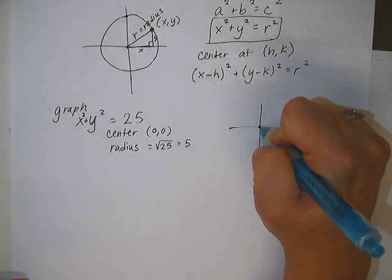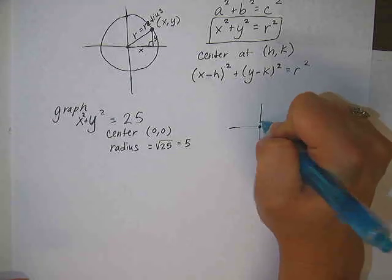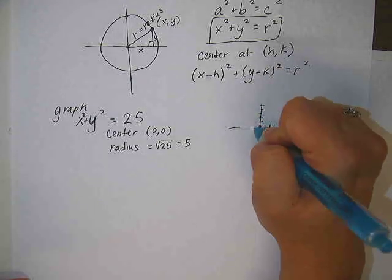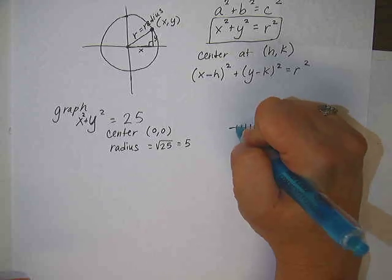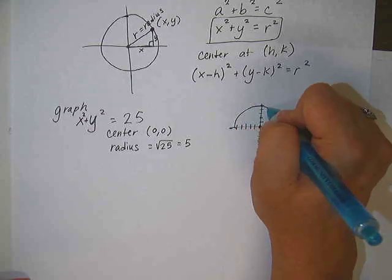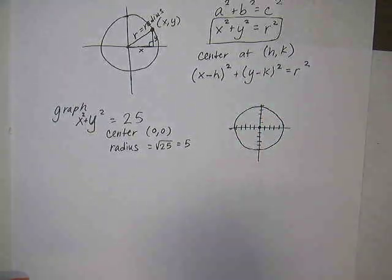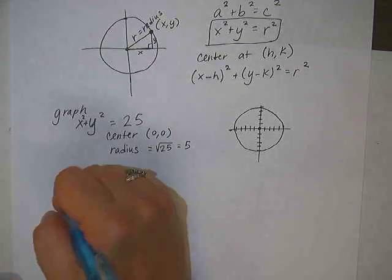So now how do we graph it? I would start by putting a dot at 0, 0 for the center, and then just count 5 in each direction for your radius, and then connect it into a smooth-edged circle as possible. I don't expect your pictures to be perfect.